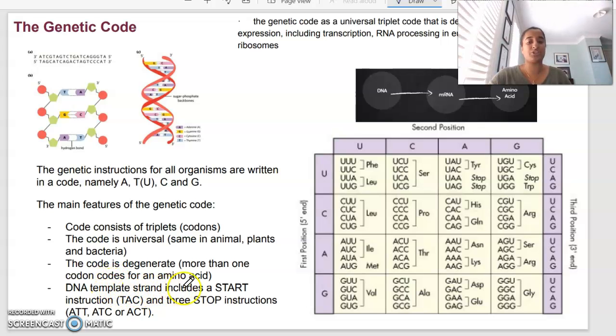Our DNA template strand always has a start codon. The start instruction is TAC. The codon for that is AUG, and same with stop instructions. DNA is ATT, ATC, ACT. The complementary for the mRNA codon would be UAA, UAG, and UGA.